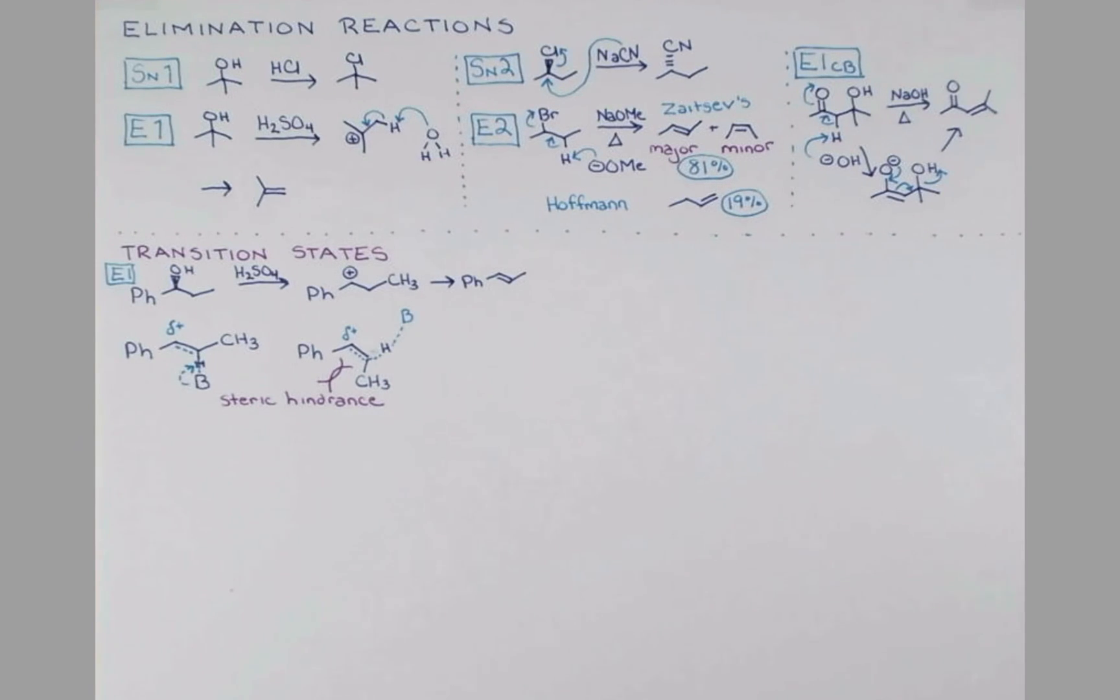Now, in the simple example of the E2 reaction that we outlined above, we get the Zaitsev's products with formation of the E-alkene as major. This is because in that example, there are actually two alpha protons that we can deprotonate. However, as we'll see near the end of the video, there are important exceptions to Zaitsev's rule with E2 eliminations. In order to identify these, we have to be able to look at the transition state carefully. So, let's get into that now.